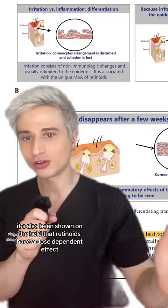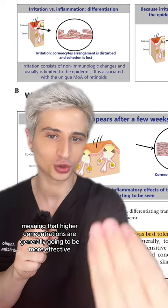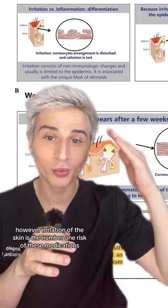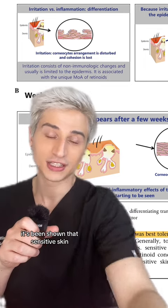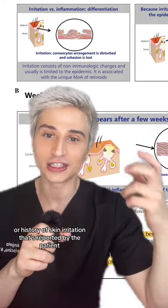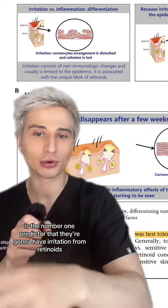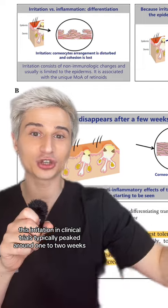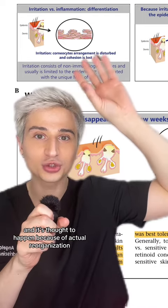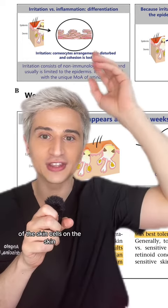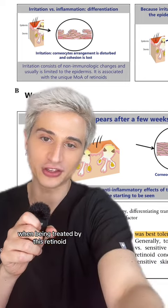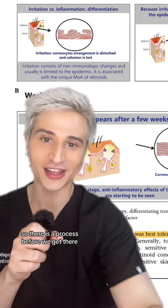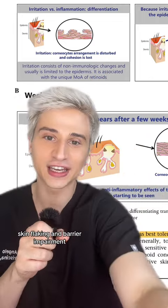It's been shown that retinoids have a dose-dependent effect, meaning higher concentrations are generally more effective. However, skin irritation is the number one risk of these medications. Sensitive skin or a history of skin irritation is the top predictor of irritation from retinoids. In clinical trials, irritation typically peaked around one to two weeks, thought to occur due to reorganization of skin cells — leading to disadhesion, skin flaking, and barrier impairment.